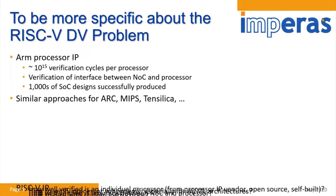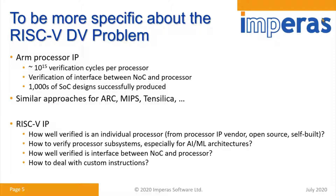It's quite a challenge in the RISC-V world because you have to think about how well your processor is verified. If you're building it yourself, it's up to you to choose how much verification you've done and what coverage. And then once you've got the processor verified, you have to worry about the subsystems it sits in. In AI and machine learning, you might have 100 of these processors, and you have to consider your interface to your device and the network-on-chip. And then there's the question of custom instructions.